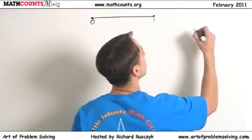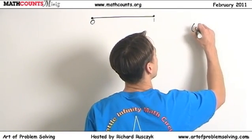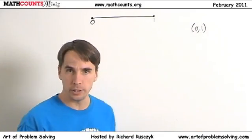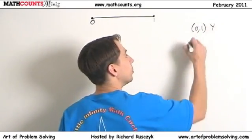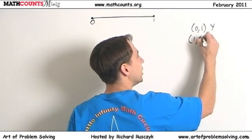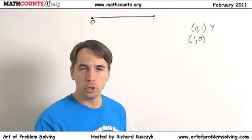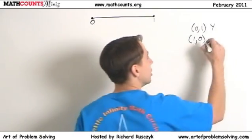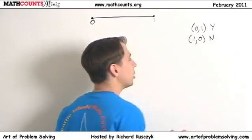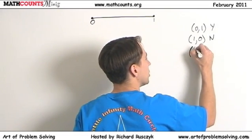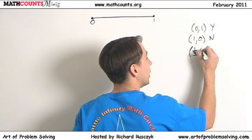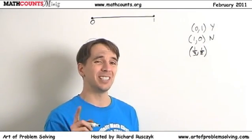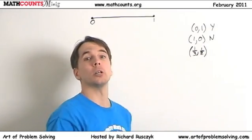Suppose I choose zero and then one. Well, clearly one is more than a quarter greater than zero, so that one's good. But if I had chosen them in the other order — one and then zero — that's no good. We need the second number to be more than a quarter greater than the first. Let's try one-third and one-half. One-half is greater than one-third, but it's not more than a quarter greater than one-third, so this one's no good.